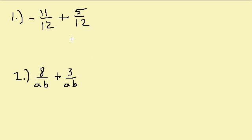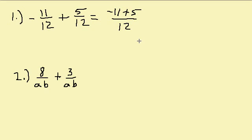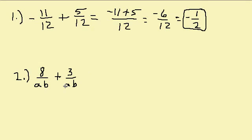Subtracting fractions — we have negative 11 over 12 plus 5 over 12. Whenever we're adding or subtracting fractions, we have to have a common denominator, meaning the bottom numbers have to be the same. We already have a common denominator here, so we combine the numerators: negative 11 plus 5 over 12, which gives us negative 6 over 12. That reduces to negative one-half, and there's our answer.